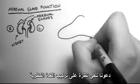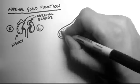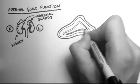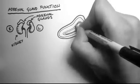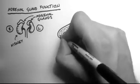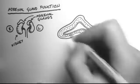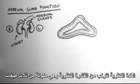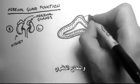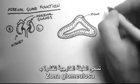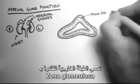Now let's have a look at the structure of an adrenal gland. The adrenal gland is made up of three layers of cortex and then an inner medullary layer. The most outer layer is the zona glomerulosa.